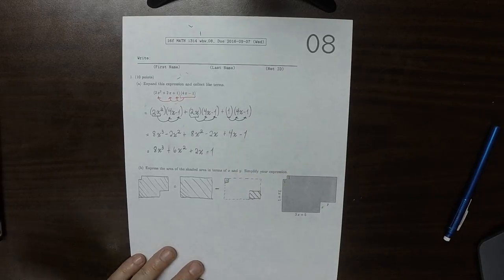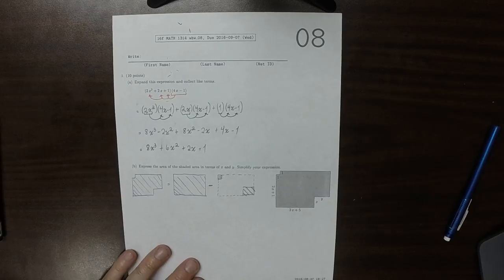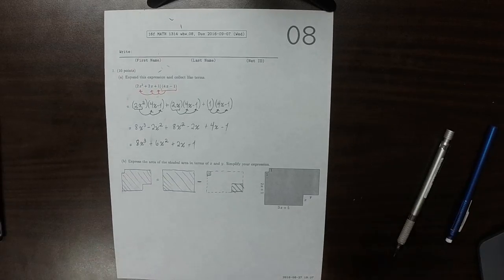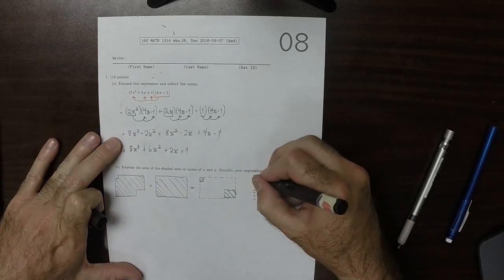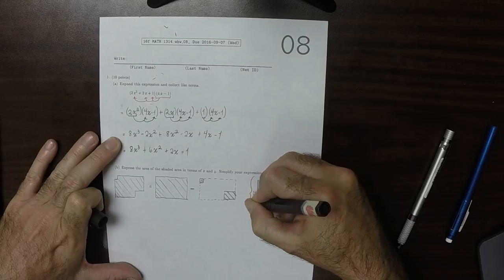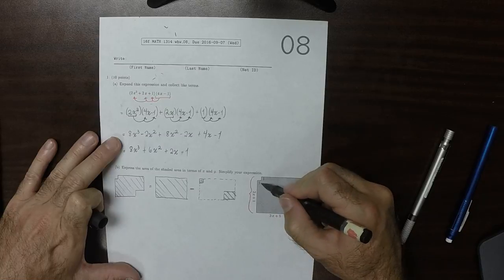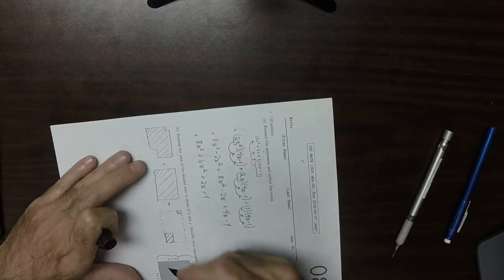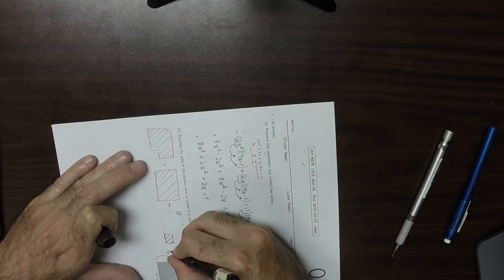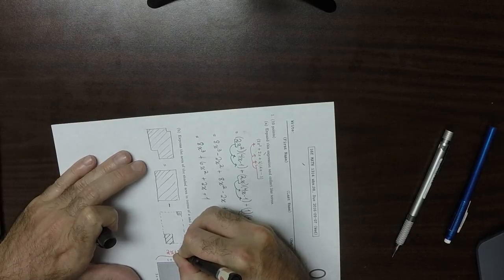That would be a little easier to deal with it that way. Well, this whole side right here, because this one side is 2x plus 1, if we add one more, this would be 2x plus 2.